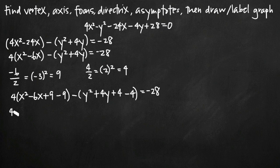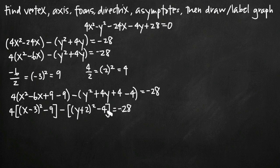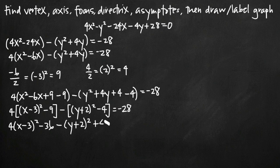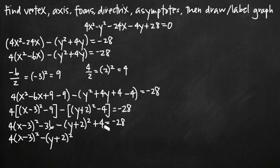Now if we change our squared polynomials into squared terms, we get 4 times x minus 3 squared minus 9, minus y plus 2 squared minus 4, equals negative 28. We want to remove these constants to be left with just the squares. Distributing gives 4 times x minus 3 squared minus 36, minus y plus 2 squared plus 4, equals negative 28. Moving constants to the right: negative 36 plus 4 is negative 32. Adding 32 to both sides, the constants go away on the left, and on the right we get 4, since negative 28 plus 32 equals 4.